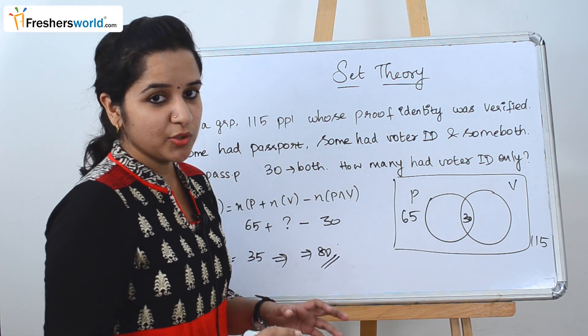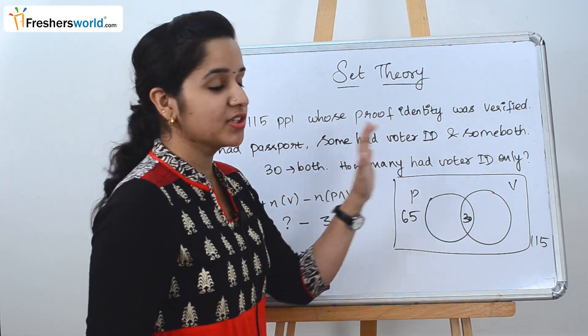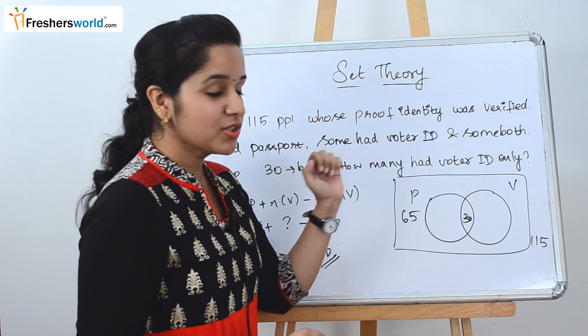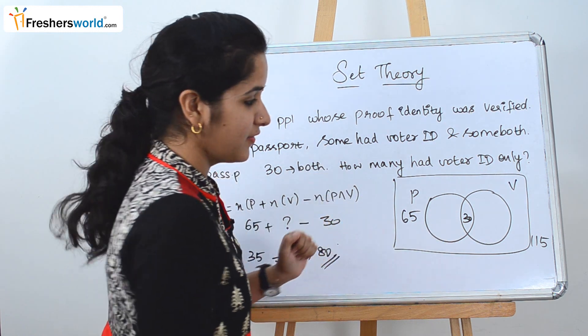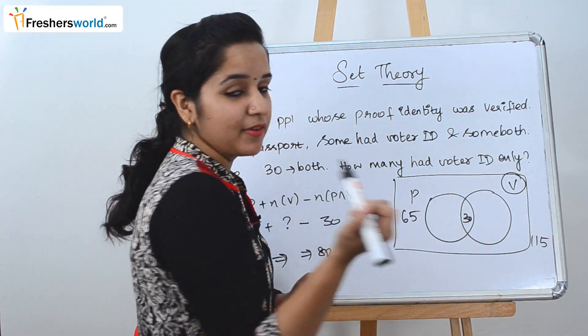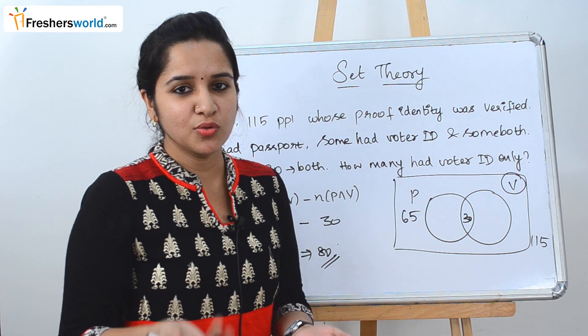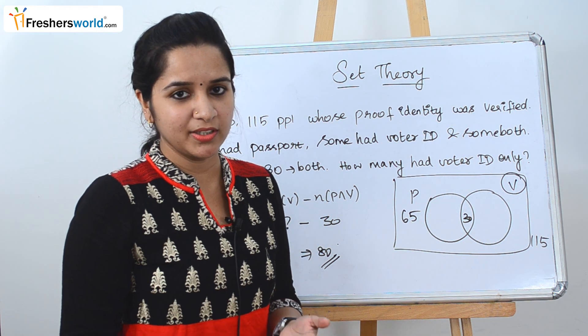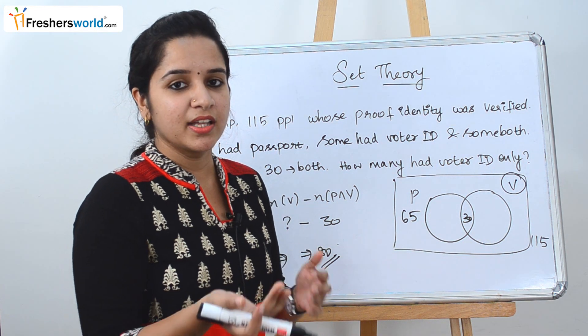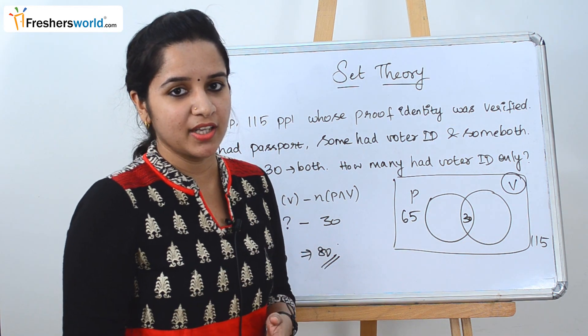So 80 is the number of people who have only voter ID. To understand this better, we drew a Venn diagram to identify exactly what we needed to find. We used the normal formula, substituted the values, and got the answer.